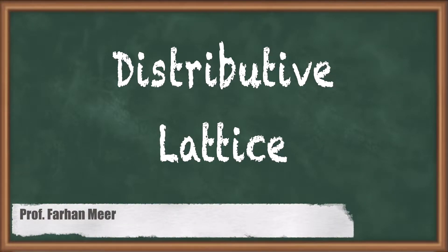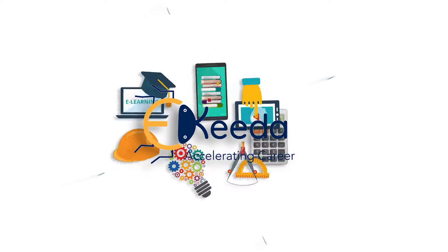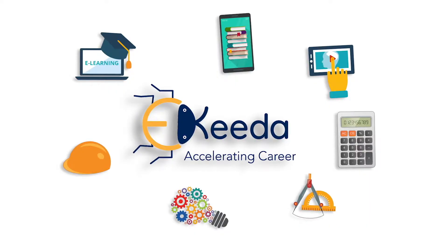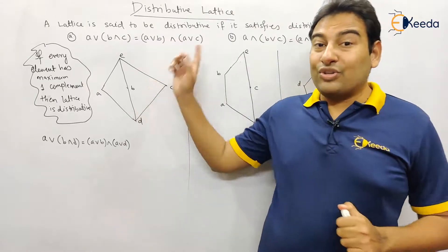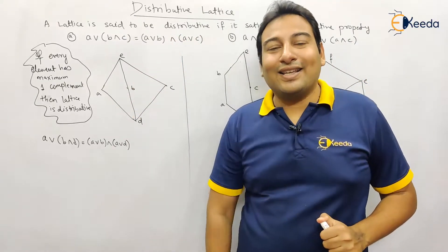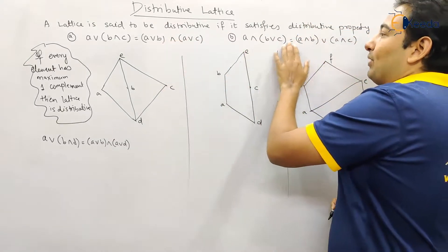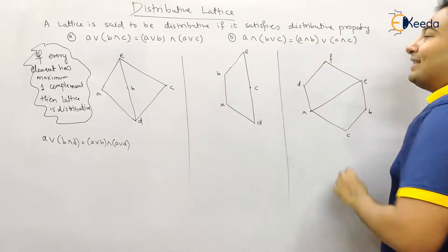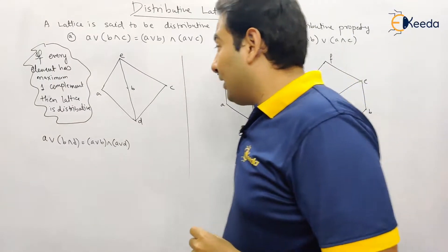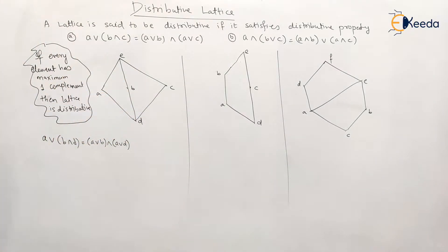Hello friends, in this video we'll discuss about distributive lattice and we'll see examples on it. Welcome back friends, now we'll discuss about distributive lattice. A lattice is said to be distributive if it satisfies distributive properties. A problem is given to us and we need to check whether this lattice is distributive or not.